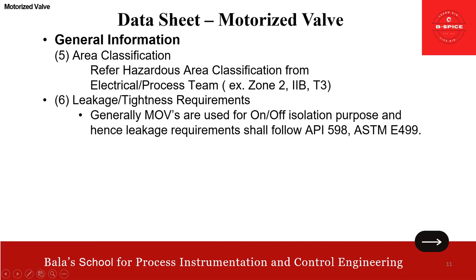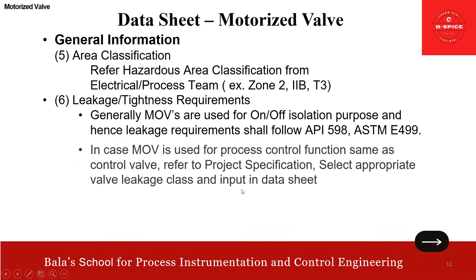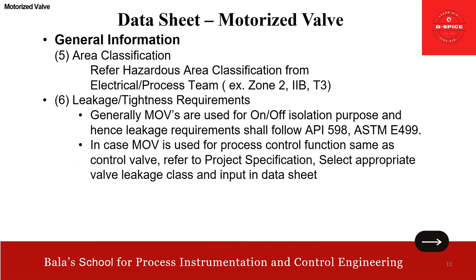Then the leakage and tightness requirements. Generally, MOVs are used for on-off isolation purpose, and the leakage requirements should follow API 598 or ASTM E499. We'll be dealing a separate topic on all classification of codes from A to Z, what each code stands for, what the application is, and in what way it is relevant to instrumentation. In case if MOV is used for a process control function — same as a control valve — then we need to refer the relevant project specification and select the appropriate valve leakage and input into the data sheet.